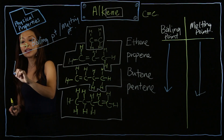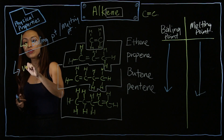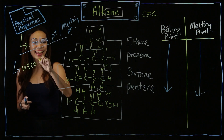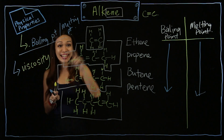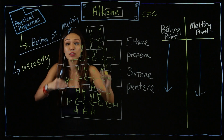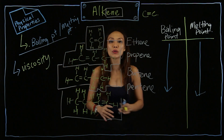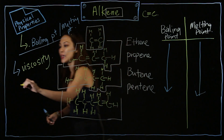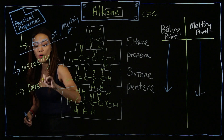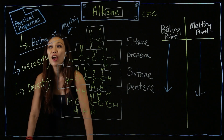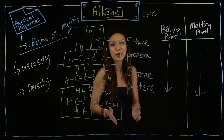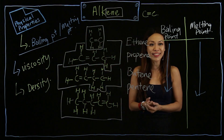How about another physical property? Well, you can also look at their viscosity. Viscosity means their thickness. As you go down the group, the number of carbon increases, so their viscosity also increases. They also get denser, so density also increases. Basically, all the properties increase because the number of carbon increases.